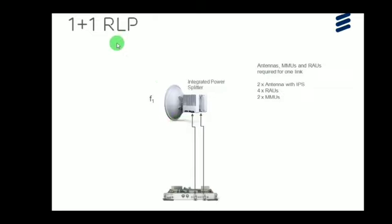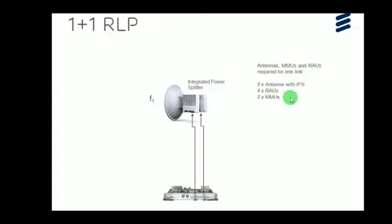For 1+1 radio link protection with an integrated power splitter, the requirements are: 2 antennas with an integrated power splitter, 4 radios at near and far end, and 2 MMUs at near and far end. Two radios are installed in a single antenna using the integrated power splitter. The same configuration is installed at the far end as well.